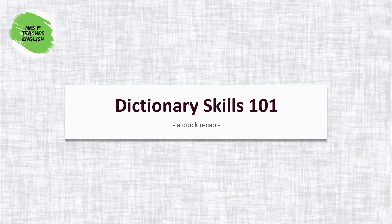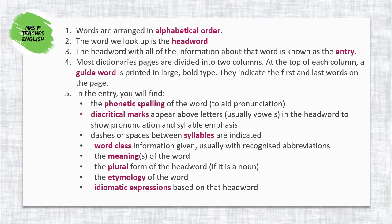Let's formalize what we have gone over in the previous slides. We know that words in dictionaries are arranged in alphabetical order, that the word you are looking for is called the head word, and that all the information under the head word is called the entry. In this entry you'll find how to pronounce the word, what it means, how to use it as a different part of speech, and where the word comes from.